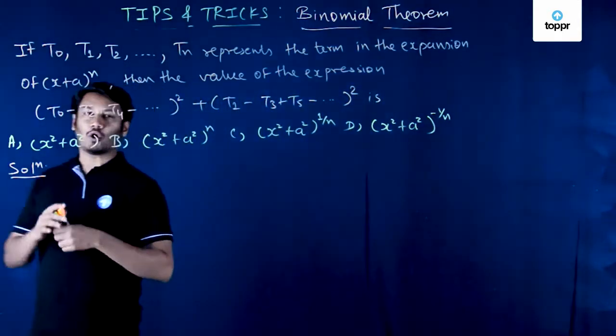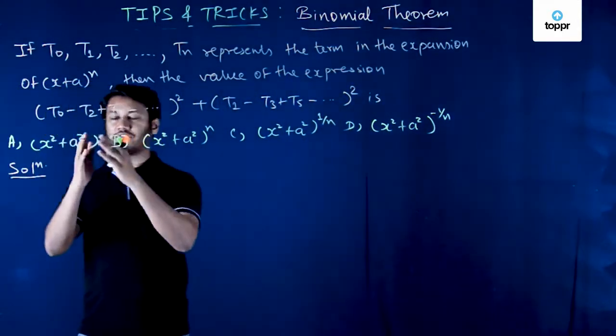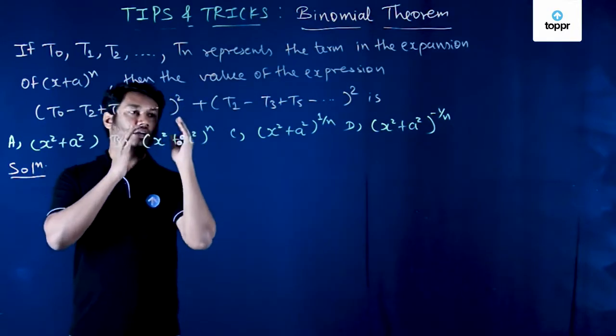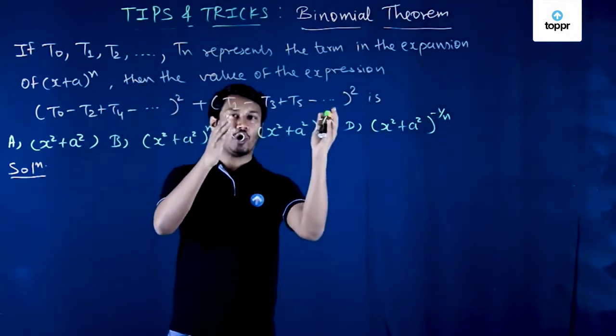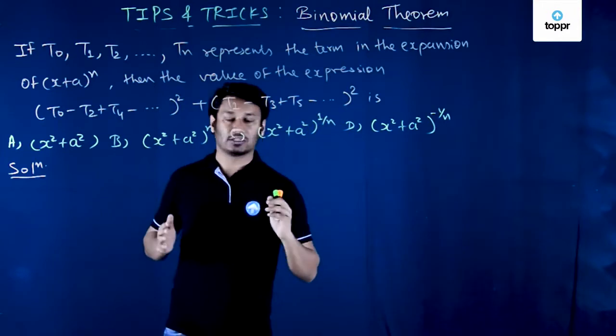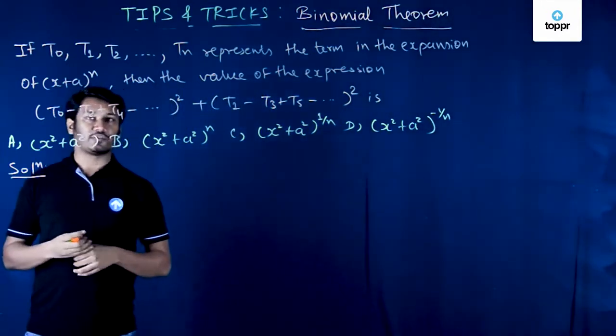In the given expression you can see that we have all the even number terms collected together with alternate signs squared and added with the same form, this time for odd number terms. You can see four options also in front of us.